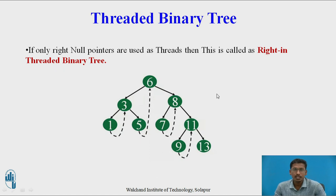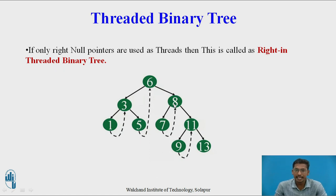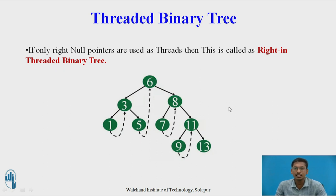Similarly, if only right null pointers are used as threads, this is called a right-in threaded binary tree. In right null pointers, we store in-order successors. The in-order successor of 1 is 3, so the address of 3 is stored in the right child of 1. Similarly, the in-order successor of 5 is 6, so the address of 6 is stored in the right child of 5. The in-order successor of 7 is 8, so the address of 8 is stored in the right child of 7. The in-order successor of 9 is 11, so the address of 11 is stored in the right child of 9. This tree is called a right-in threaded binary tree.